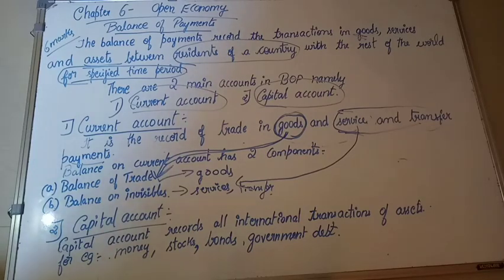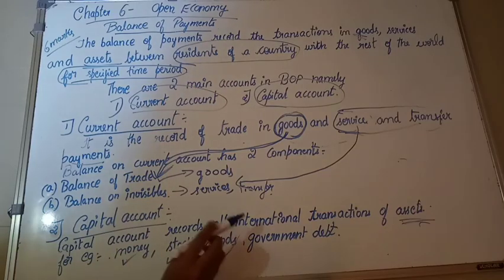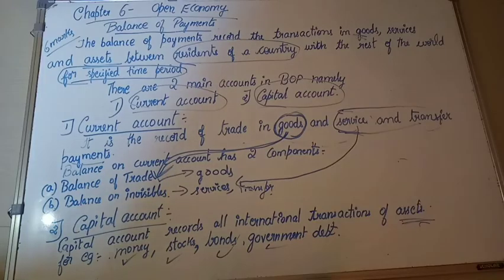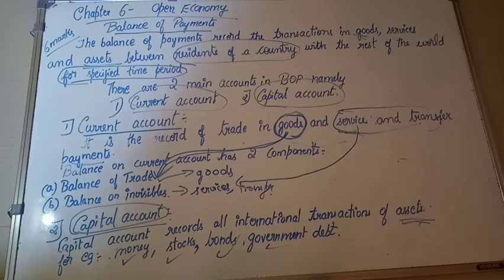The second one is capital account. Capital account records our international transactions of assets. So, what are these assets? It may be money, stock, bonds, or government debt. Transactions of all of these assets come under capital account. That's all about the balance of payment.